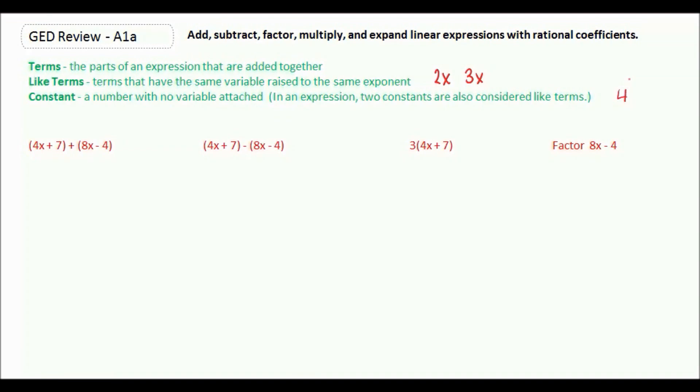So first we're going to add two expressions together. I have (4x + 7) + (8x - 4). Now the only thing we can do here is combine our like terms. Like terms are terms that have the same variable raised to the same power. So here I have 4x and 8x.